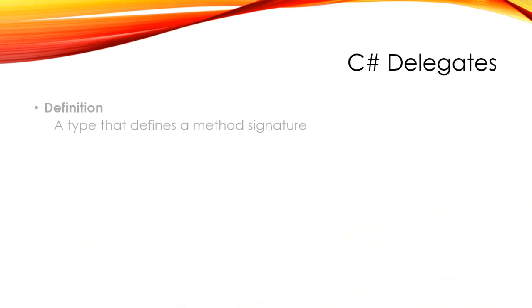Let's start out with what a delegate is. The definition of a delegate is a type that defines a method's signature. We know what types are — we deal with them all the time, whether they're integers, DateTimes, custom classes, or lists of strings. These are all different types that we have in C#.